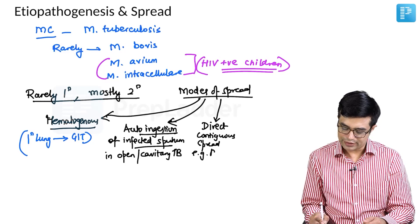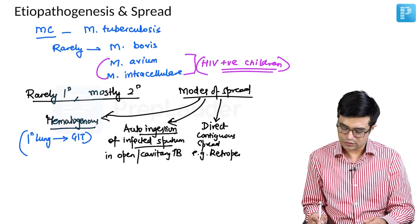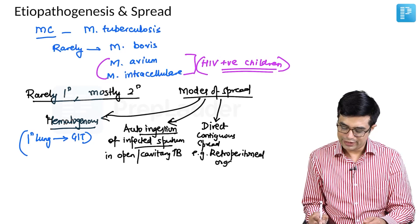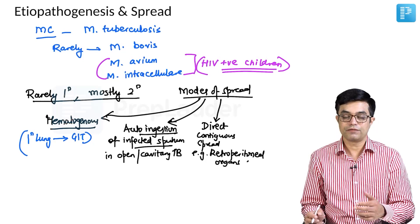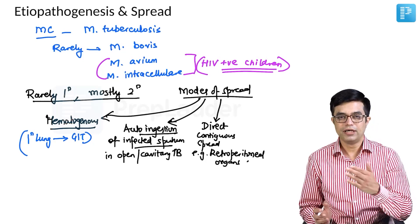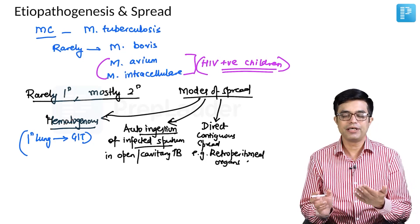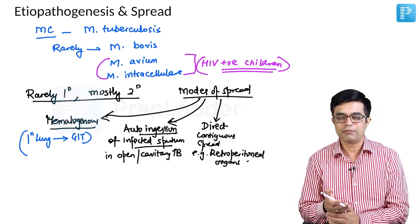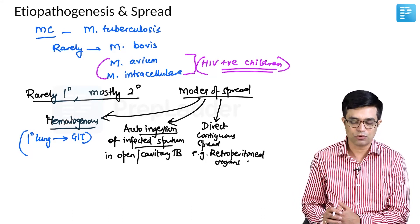For example, there is some retroperitoneal organ. Suppose there is a kidney which is involved, some retroperitoneal part of the ureter is involved and from there, any abdominal structure coming into contact with that, there can be direct seeding. It is a rare form, but it is described in the books.